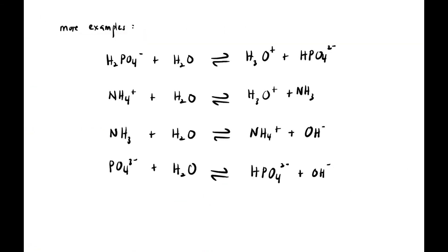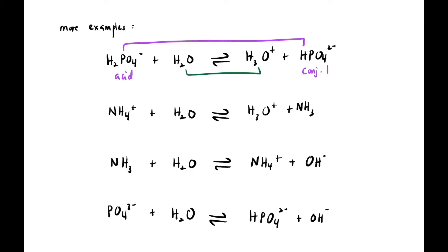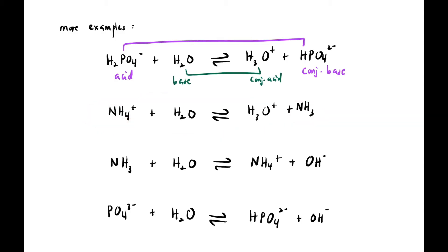Let's look at more examples. First: H₂PO₄⁻ + H₂O → H₃O⁺ + HPO₄²⁻. Pairing H₂PO₄⁻ with HPO₄²⁻ — HPO₄²⁻ has fewer H⁺, so H₂PO₄⁻ on the left is the acid and HPO₄²⁻ on the right is its conjugate base. In this case H₂O is the base and H₃O⁺ is its conjugate acid.